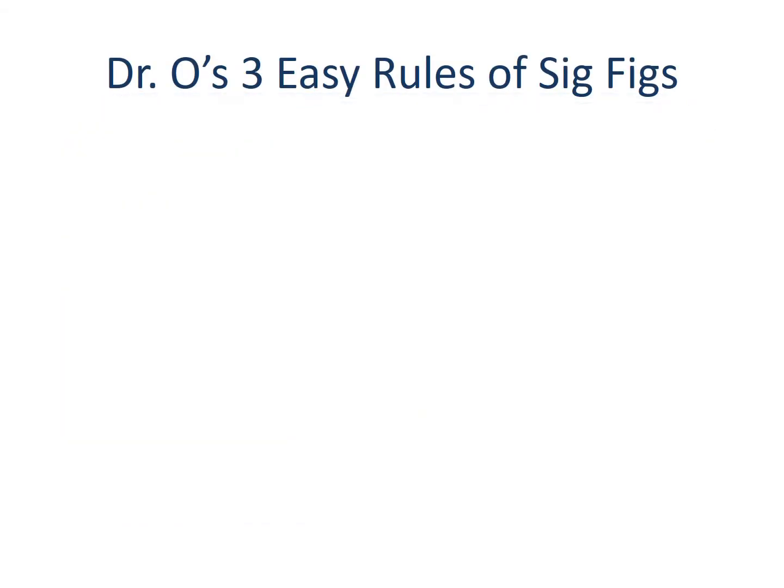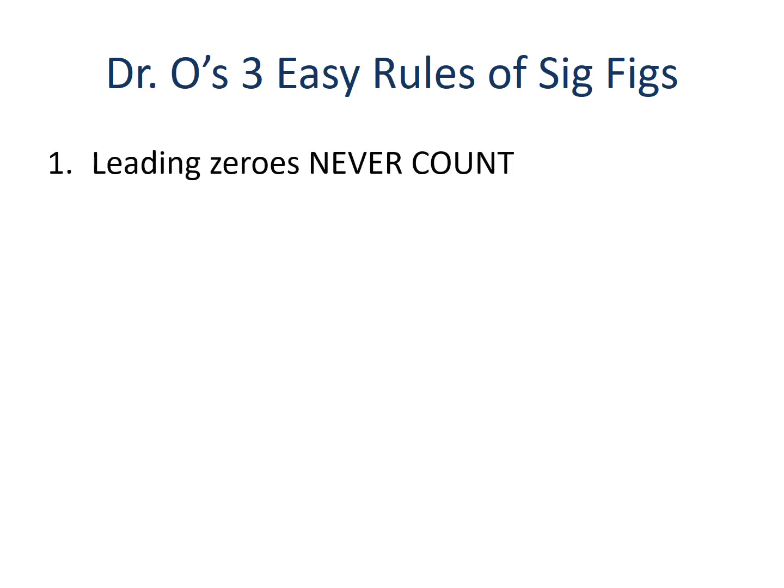Let's start by taking a look at these three easy rules. Rule number one states that leading zeros never count. When you have a number that starts with a zero, or even many zeros, those beginning zeros will never be counted towards your significant digits. There are no exceptions to that rule.